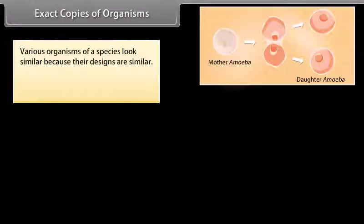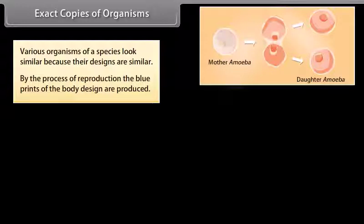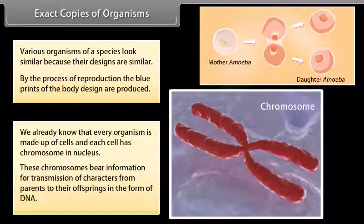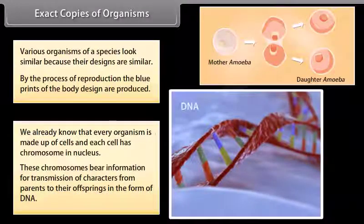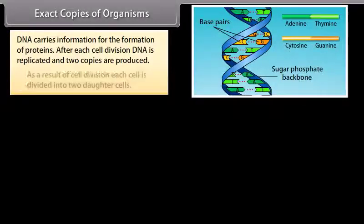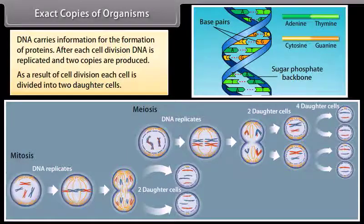Various organisms of a species look similar because their designs are similar. By the process of reproduction, the blueprints of the body design are produced. Every organism is made up of cells, and each cell has chromosomes in the nucleus. These chromosomes bear information for transmission of characters from parents to their offspring in the form of DNA. DNA carries information for the formation of proteins. After each cell division, DNA is replicated and two copies are produced, resulting in two daughter cells.